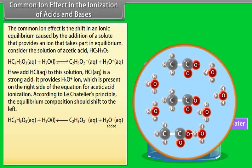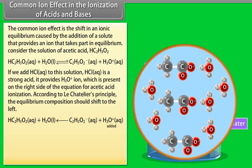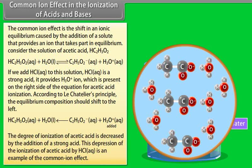H₃O⁺ is present on the right side of the equation for acetic acid ionization. According to Le Chatelier's principle, the equilibrium composition shifts to the left. The degree of ionization of acetic acid is decreased by the addition of the strong acid. This depression of the ionization of acetic acid by HCl is an example of the common ion effect.